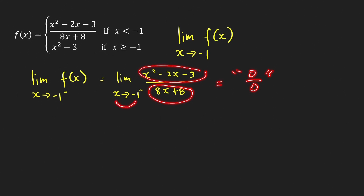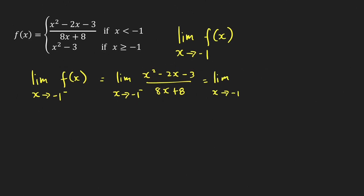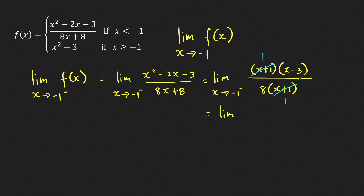Since we have 0/0, there is a common factor of (x + 1) in numerator and denominator. The denominator factors as 8(x + 1). The numerator factors as (x + 1)(x − 3). Canceling the common factor gives the limit of (x − 3)/8 as x approaches −1 from the left, which equals (−1 − 3)/8 = −4/8 = −1/2.